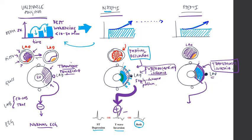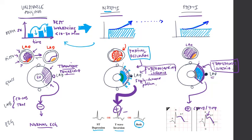Because there is such profound necrosis in a STEMI, we see positive CKMB and troponins, and a characteristic ECG finding in two or more leads: an elevated J point — that little point between the R and S waves — producing ST elevation.